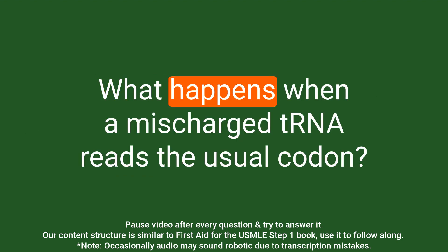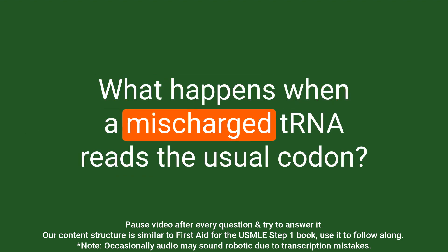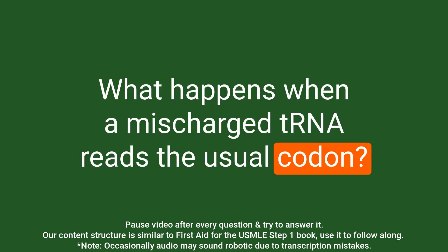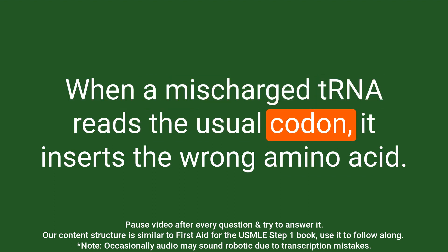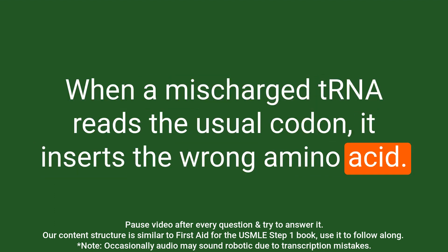Question: What happens when a mischarged tRNA reads the usual codon? Answer: When a mischarged tRNA reads the usual codon, it inserts the wrong amino acid.